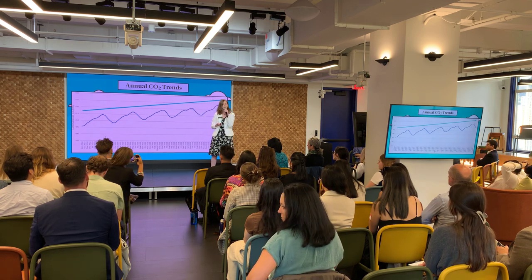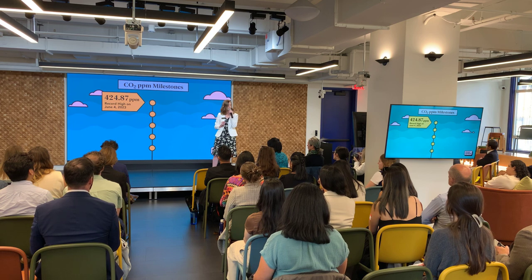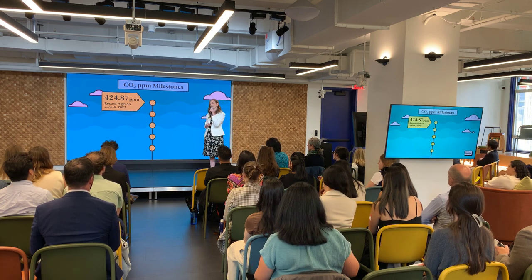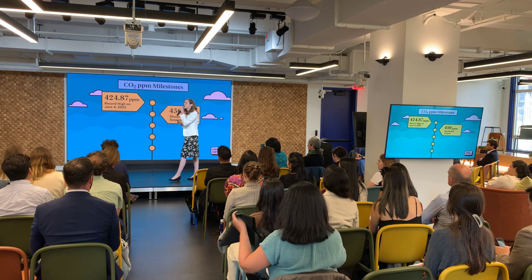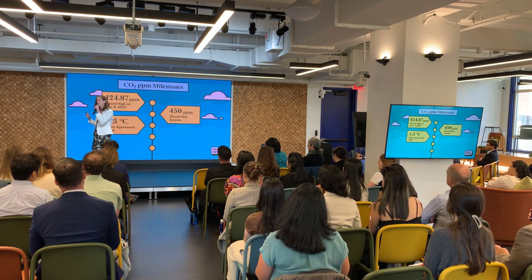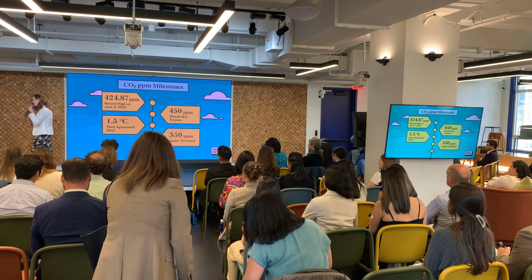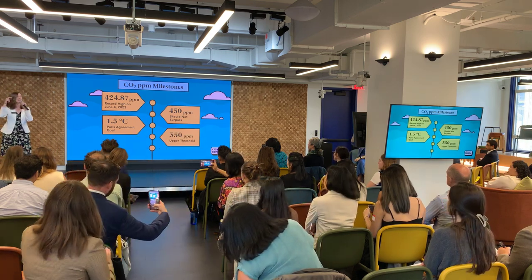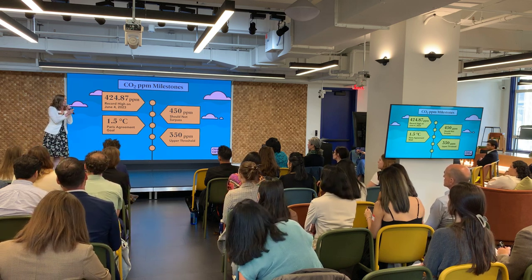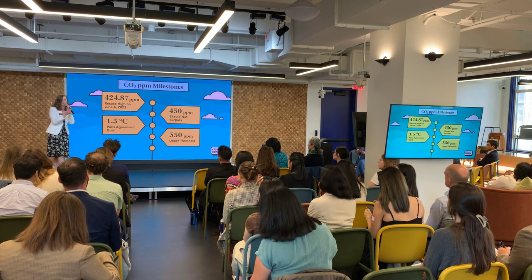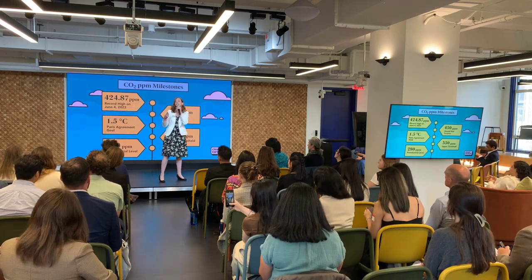Let's look at important ppm milestones. This year, we reached a record high concentration of CO2 in the atmosphere. On June 4th, we reached 424.87 parts per million. Now, experts say if we surpass 450, that means we're going to surpass the 1.5 degrees Celsius temperature increase that the Paris Agreement is concerned about. Experts also say that we should try to get down to 350 ppm at least — and I say at least, because once we dip below that 350 mark, things are going to start to stabilize again. However, to be safe, they actually say, ideally, we should get down to the pre-industrial levels of 280 ppm.